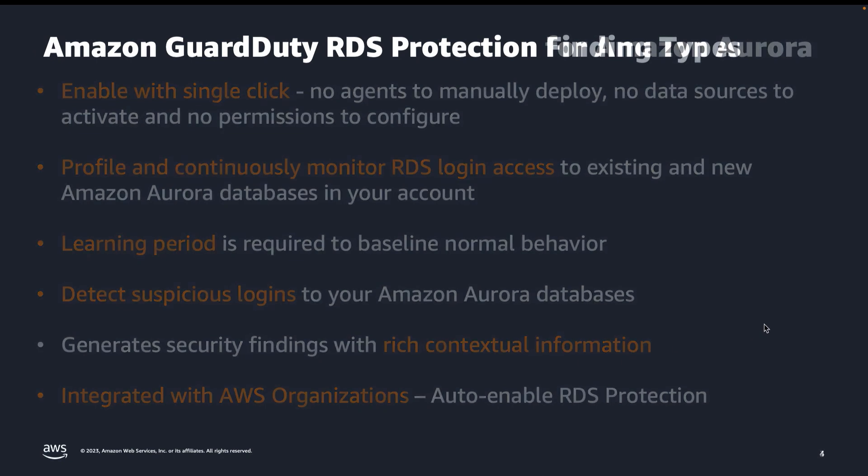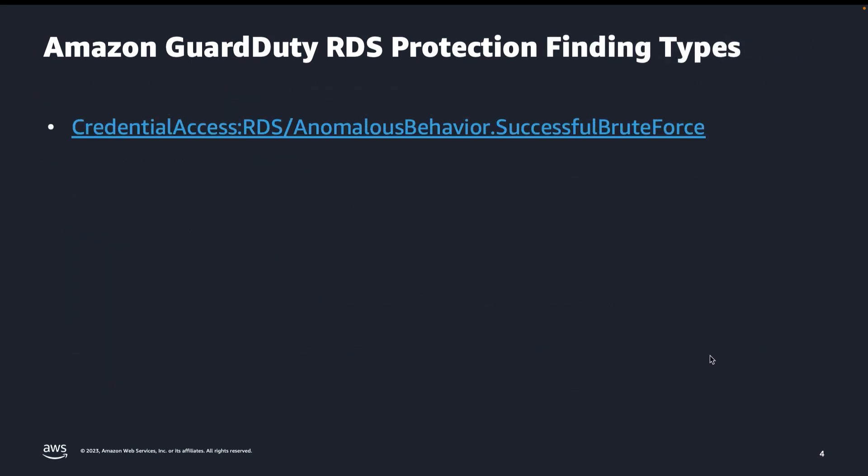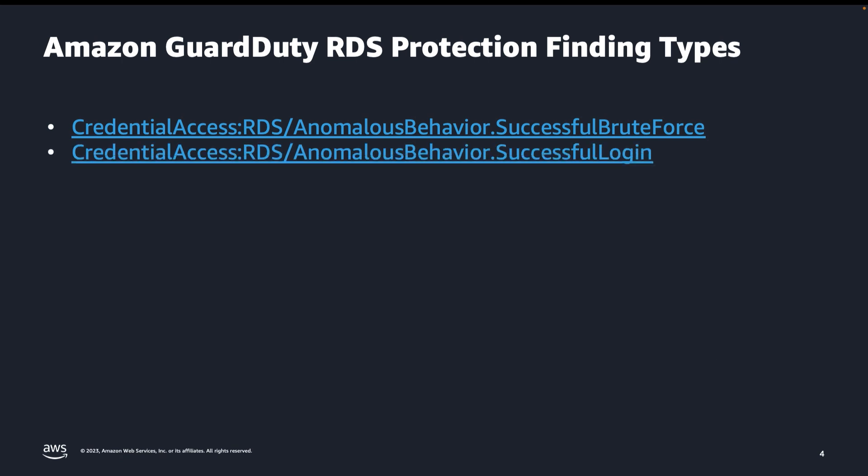There are other RDS Protection findings in addition to what I have just shown you. For example, RDS Anomalous Behavior Successful Login. This finding informs you that an anomalous successful login was observed on an RDS database in your AWS environment. This may indicate that a previously unseen user logged in to an RDS database for the first time. Depending on the contextual information, the severity can be low, medium, or high.